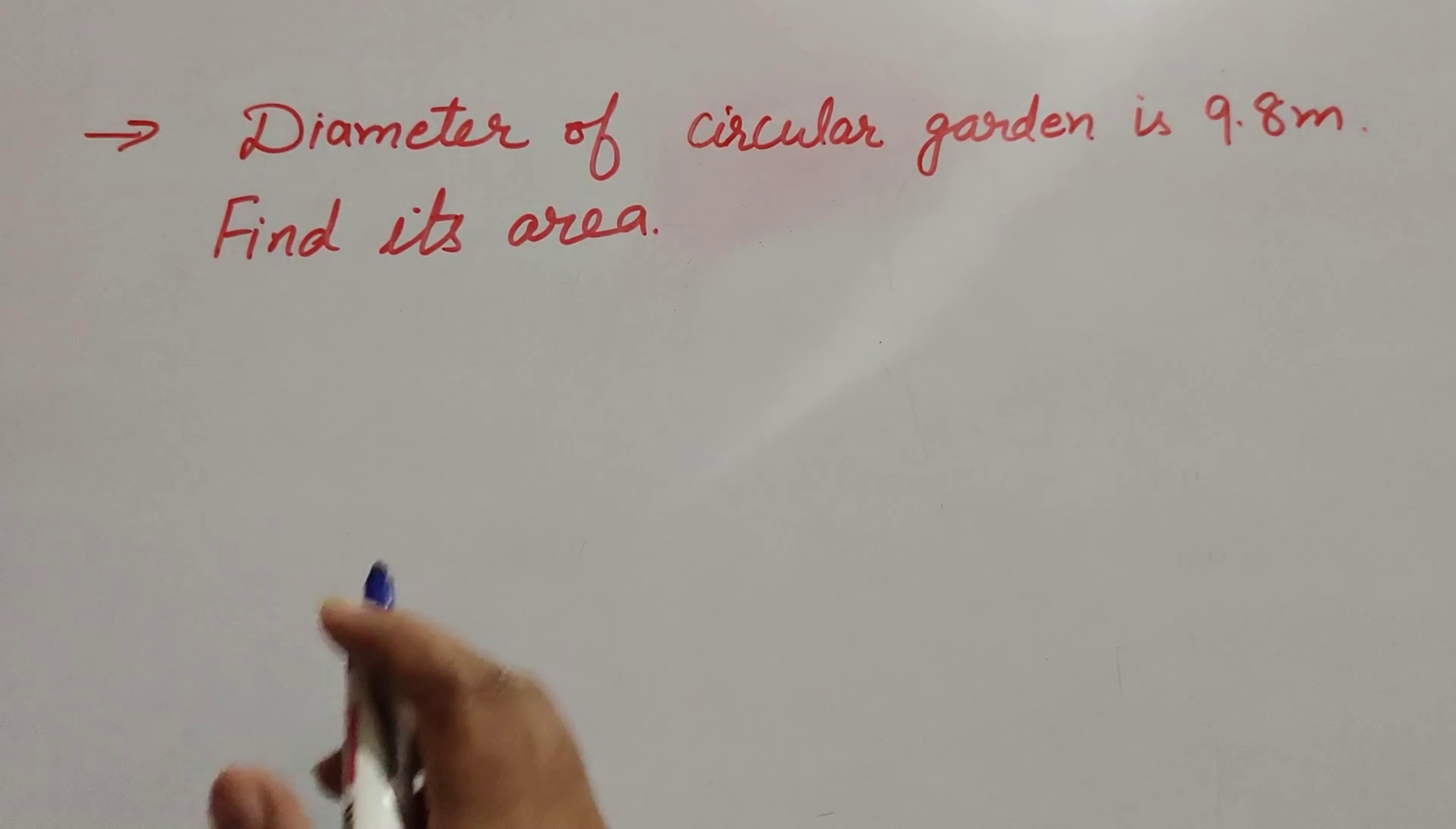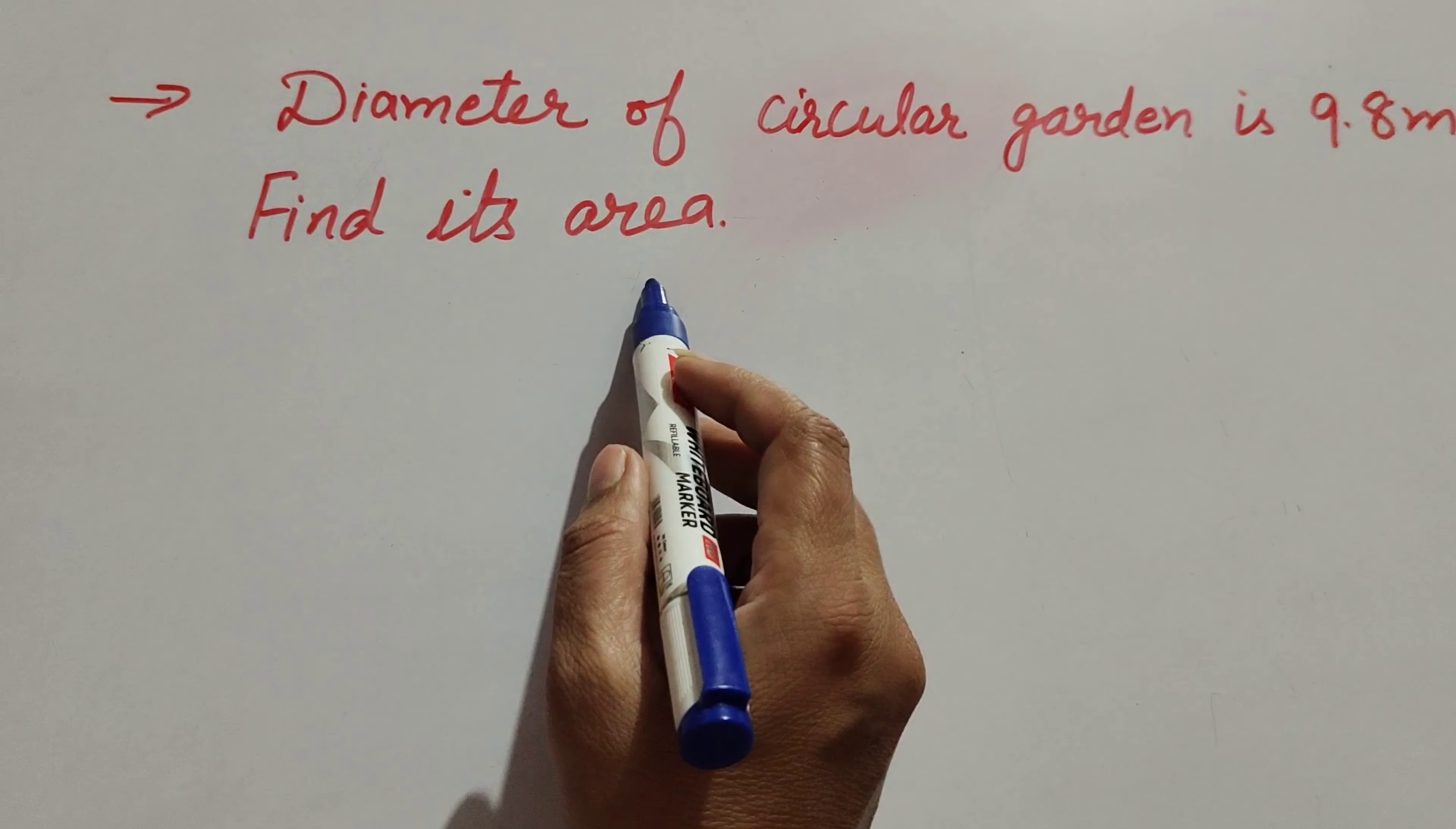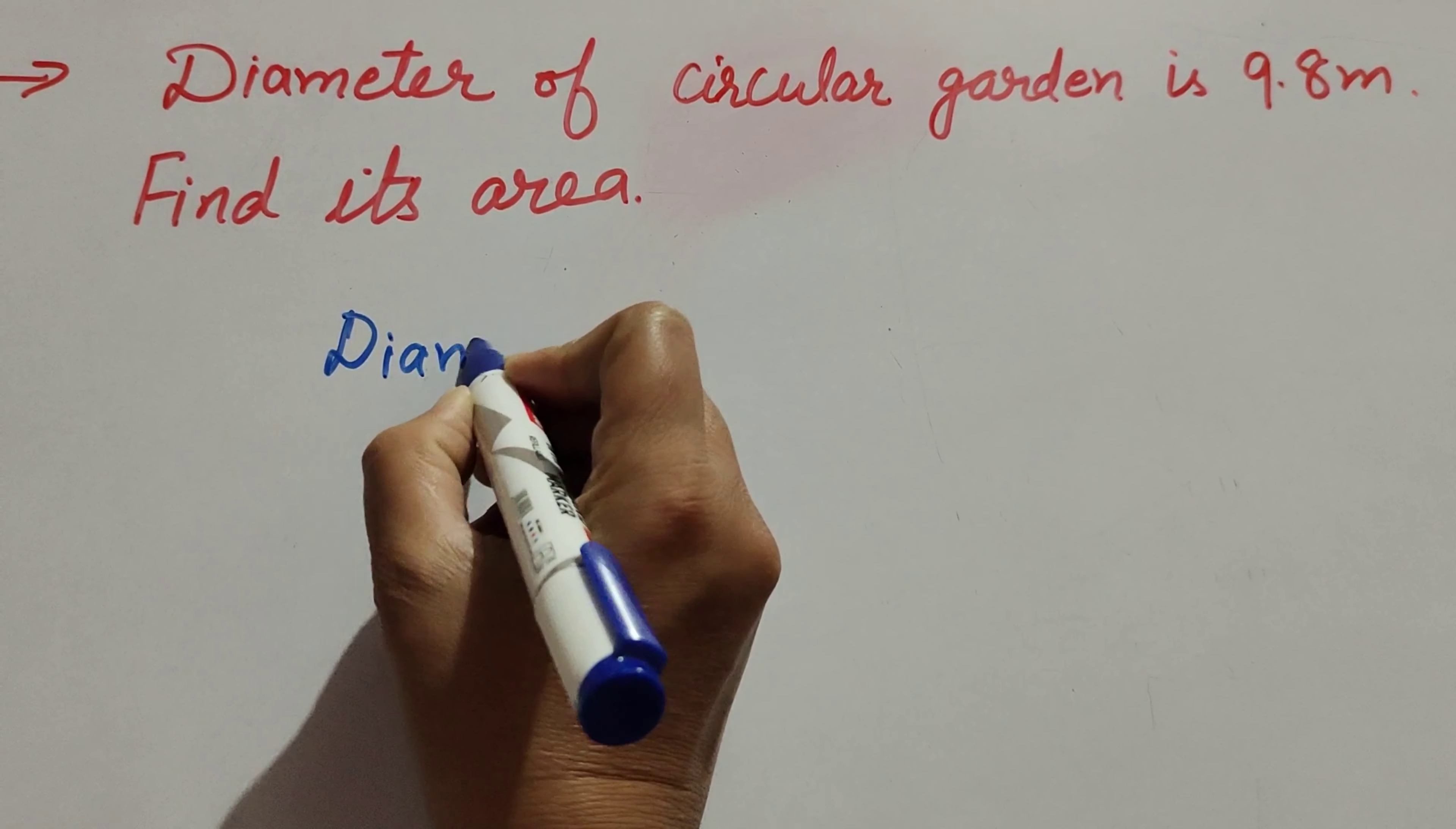Welcome to my channel. In this video, we solve: if the diameter of a circular garden is 9.8 meters, find its area. The diameter of the circular garden is given.